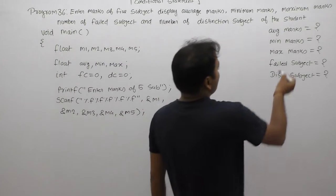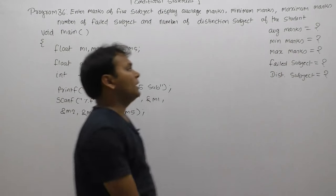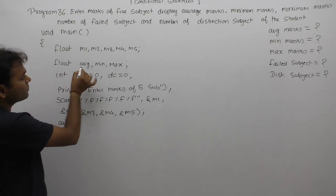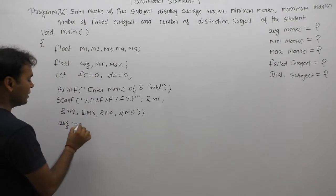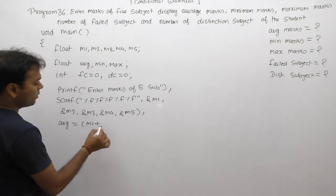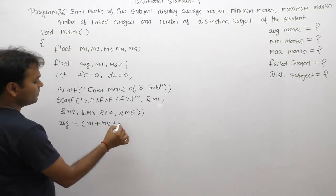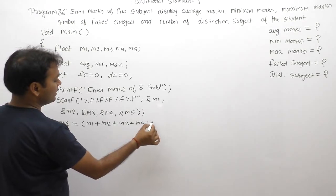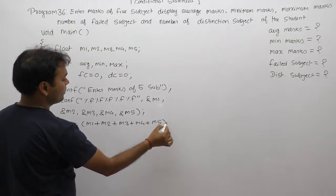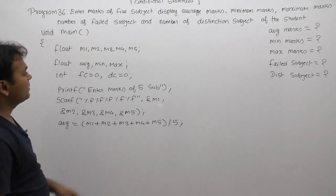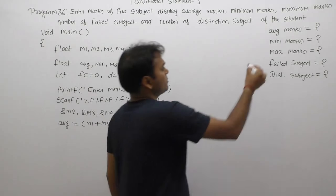Then perform calculations. First, calculating average marks. To calculate average, use a separate variable called average. Average equals the sum of all marks divided by 5: M1 plus M2 plus M3 plus M4 plus M5, divided by 5. The first problem — average — is now solved.